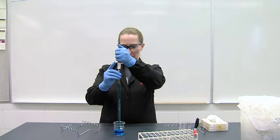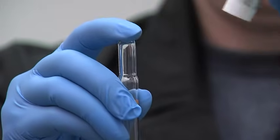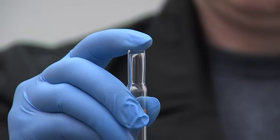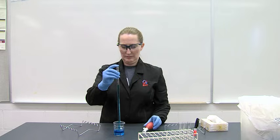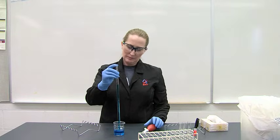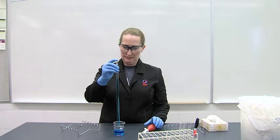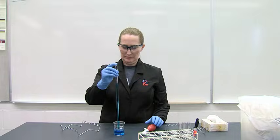Remove the bulb and cover the top of the pipette with the index finger. Check for bubbles. If there are no bubbles, proceed. If there are bubbles, drain the liquid back into the beaker and try again.